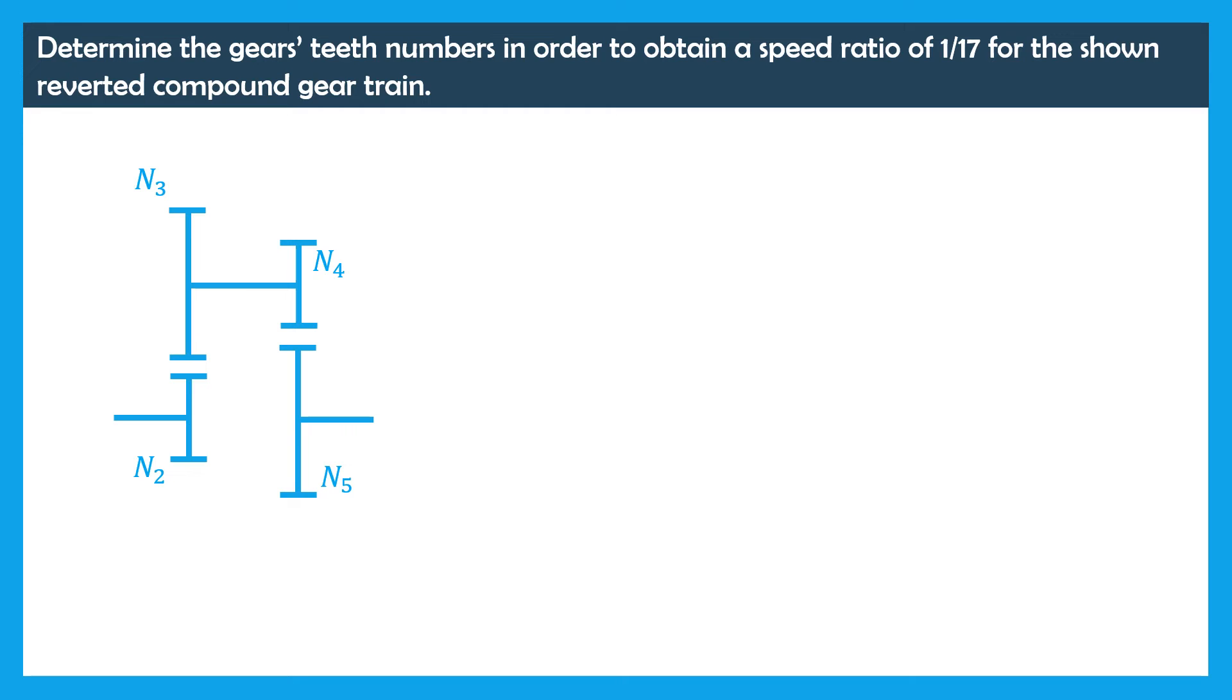These equations correspond to 2 choices that can be different from one person to another. Our first choice will deal with the way to satisfy the speed ratio which is equal to 1 over 17. This compound gear train is made of 2 stages. So we are going to choose the speed ratio of each stage to satisfy the final speed ratio. Here square root of 17 is approximately equal to 4.12.